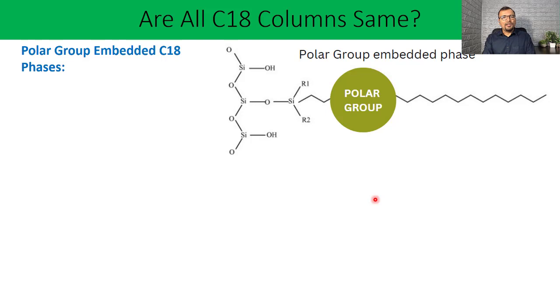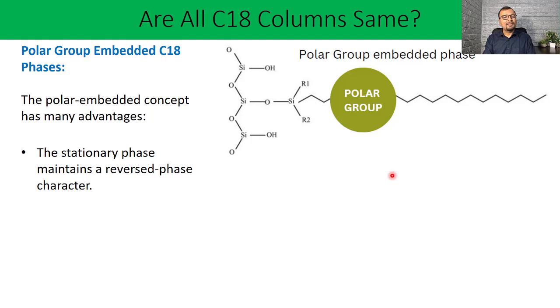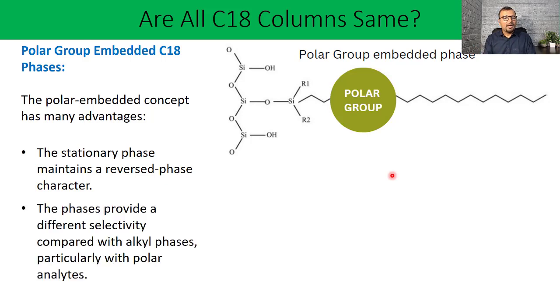It's a very popular phenomenon nowadays used by many column manufacturers, which is called polar group embedding onto the C18 chain. In the diagram, you can see that a polar group is embedded inside the C18 chain. What is the advantage of this polar group? There are many advantages. First, the stationary phase maintains a reverse phase character. Though your column becomes a little polar, you can still utilize this stationary phase for reverse phase analysis. The phases provide different selectivity compared with alkyl phases, particularly with polar analytes. As there are polar groups embedded into the C18 alkyl phase, this polar group is going to increase the polarity of the stationary phase and help in retaining polar analytes.